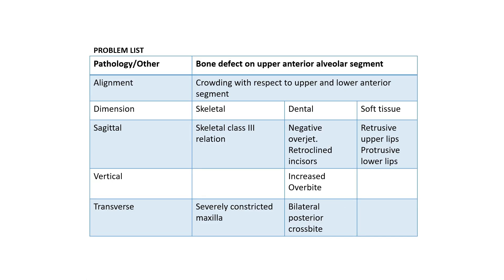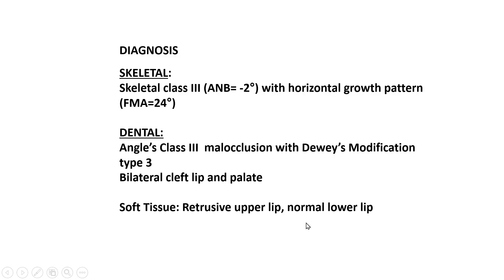The problem list for this patient was crowding in the upper and lower anterior segment, skeletal Class 3 relation, negative overjet, retroclined incisors, retrusive upper lip and protrusive lower lip, increased overbite, and severely constricted maxilla with bilateral posterior crossbite. Diagnosis is skeletal Class 3 with ANB minus 2 and horizontal growth pattern, Angle's Class 3 malocclusion with arch discrepancy modification type 3, bilateral cleft lip and palate, retrusive upper lip, and normal lower lip.